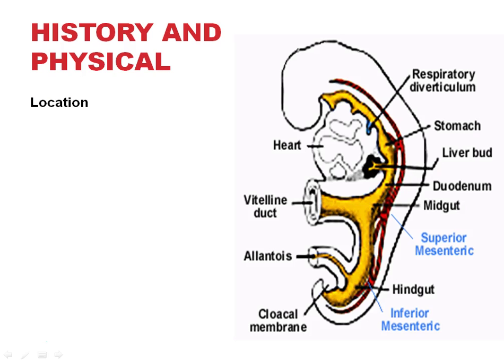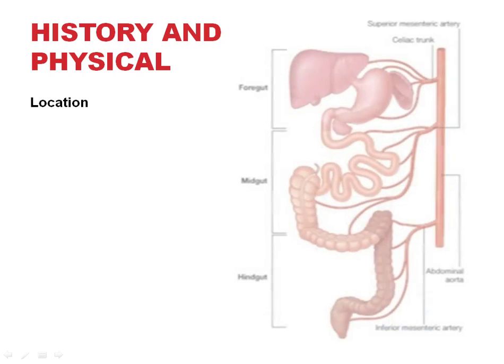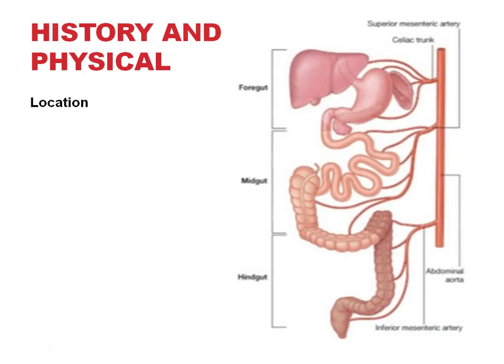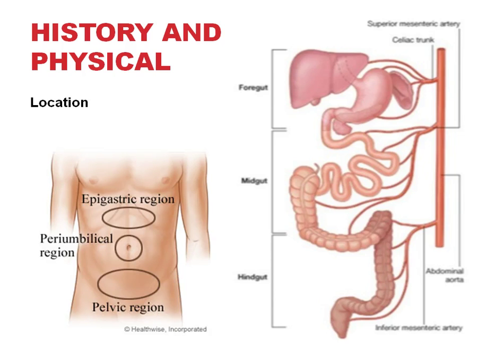The next thing to consider is the location of the pain. This is super important and it all starts with embryology. The embryo has a foregut, midgut, and hindgut, and each of these areas develop into a specific part of the abdomen. The organs found in each region can clue you in based on where the abdominal pain is located.